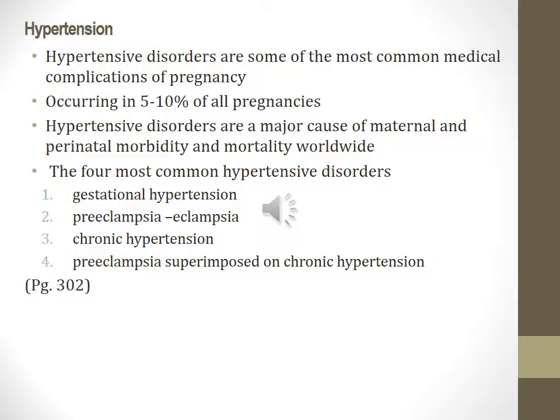Hypertension. Hypertensive disorders are some of the most common medical complications of pregnancy, occurring in approximately 5-12% of all pregnancies and are a major cause of maternal and perinatal morbidity and mortality worldwide. The four most common hypertensive disorders are: 1) gestational hypertension, 2) preeclampsia and eclampsia, 3) chronic hypertension, and 4) preeclampsia superimposed on chronic hypertension. This information is in your textbook on page 302.